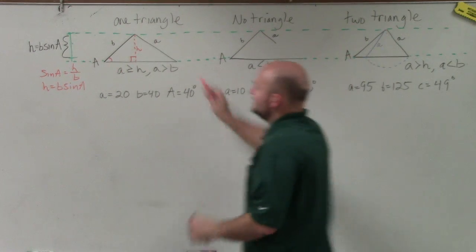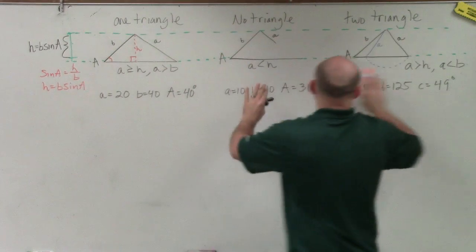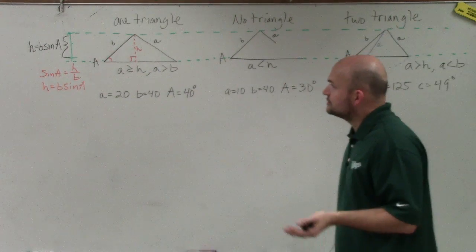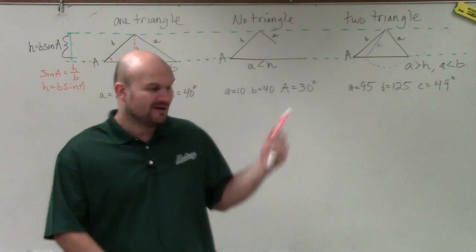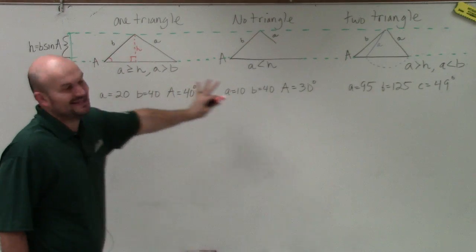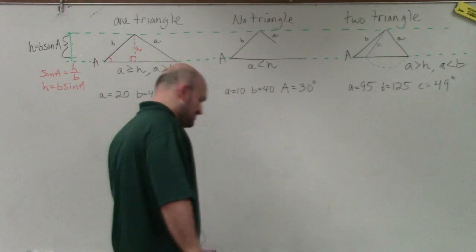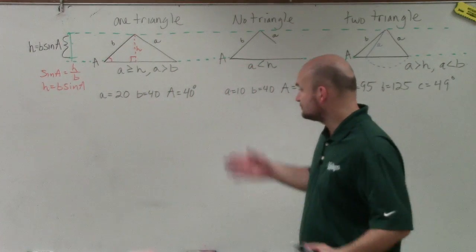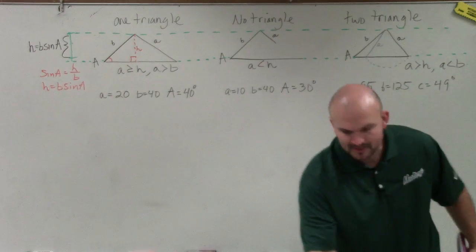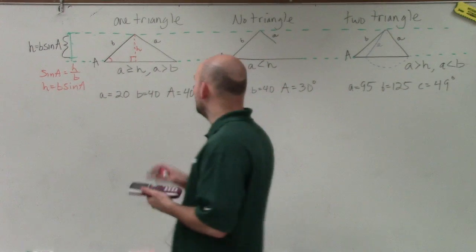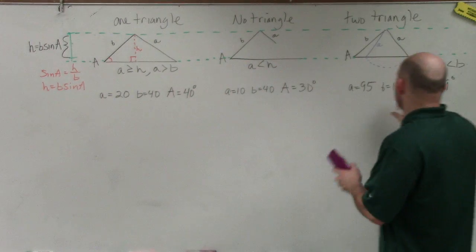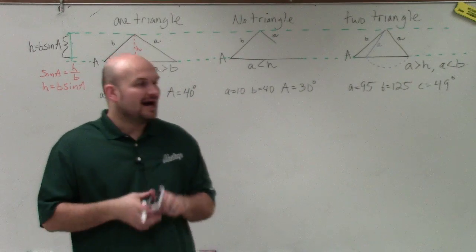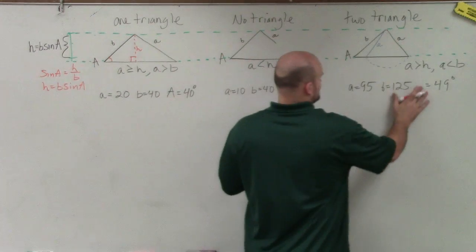And that's because you can write the sine of A, this angle right here, is going to be opposite over hypotenuse, where B would be your hypotenuse. Well, if you multiply by B on both sides, you can see that that is equal to H. So H represents the height. Now, if we can figure out the height for each one of these problems, all we need to do is just compare what the height is compared to the value of A. And by doing that, we can determine if there's going to be one, two, or no triangles.